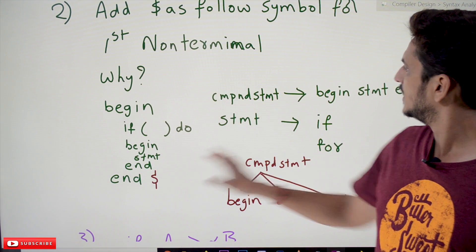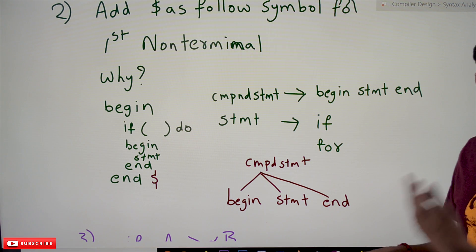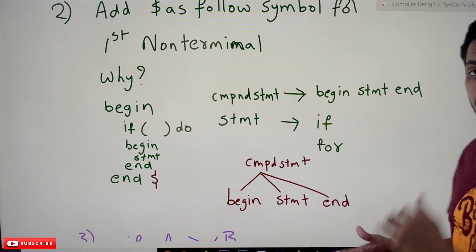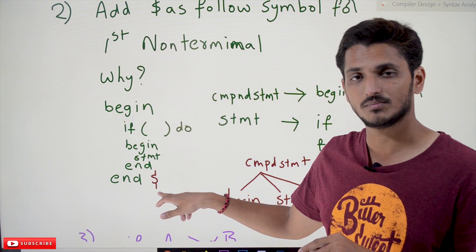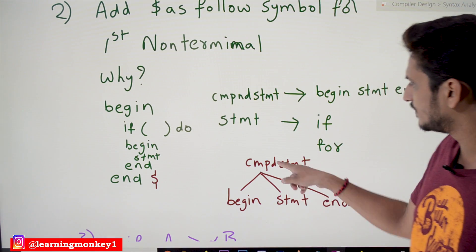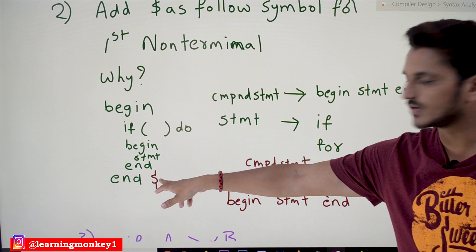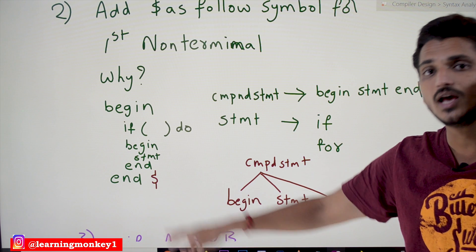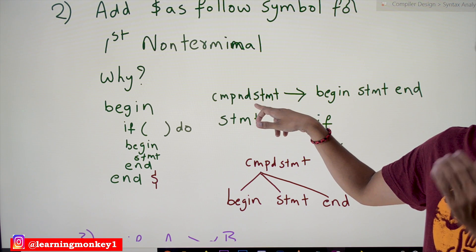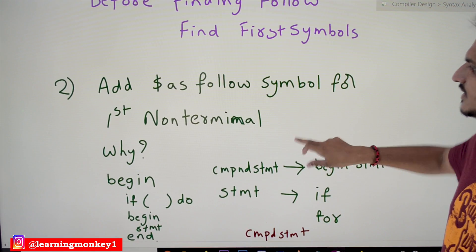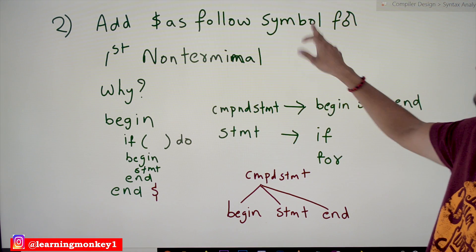After completion of compound_statement — after the final 'end' — how does the compiler know that the compound statement has finished and the program is syntactically correct? The compiler adds a special symbol called the dollar symbol at the end of the program to signal that the program has ended. That dollar symbol is what the first non-terminal encounters, which is why FOLLOW of the start symbol is dollar.